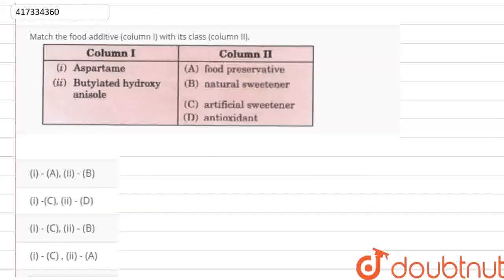Hello everyone! We are solving a matching question about what is given in column 1 as food additives to column 2. What is given in column 1? Aspartame, butylated hydroxy anisole, and preservative natural sweetener, artificial sweetener and antioxidants. So first, we will talk about aspartame.